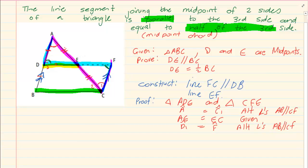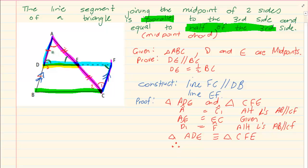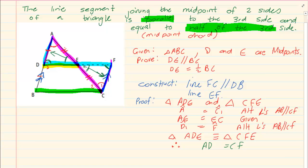Now since they are parallel, I can immediately say that triangle ADE is congruent to triangle CFE. From congruency, the remaining sides and angles are equal, which means AD is equal to CF, E1 equals E2, and EF equals DE.